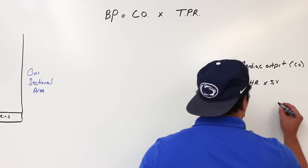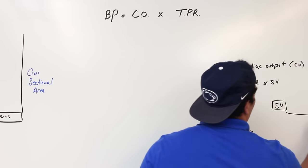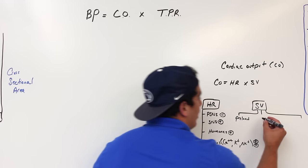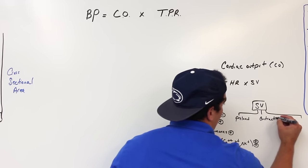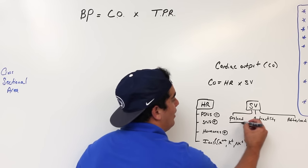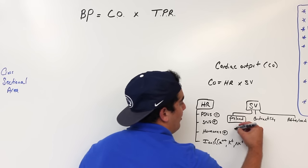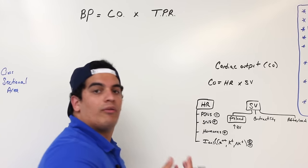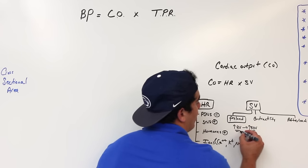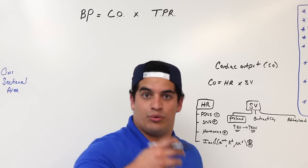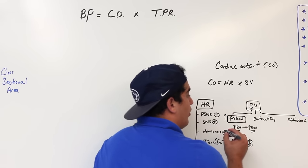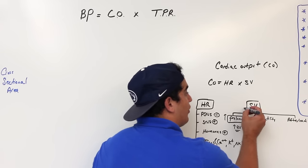Stroke volume is broken up into three components. The first is preload. Anytime you have an increase in blood volume, this increases the end diastolic volume — the volume of blood within the heart before the ventricles pump. If EDV increases, it increases the preload, which is essentially the stretch on the heart. If preload increases, that increases stroke volume.